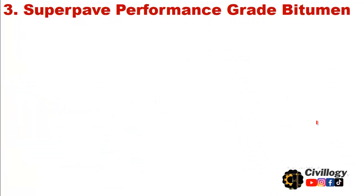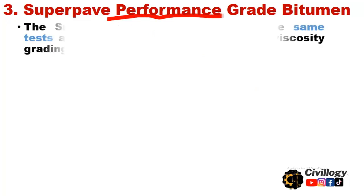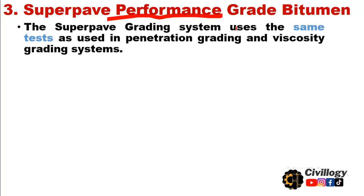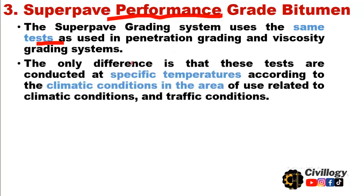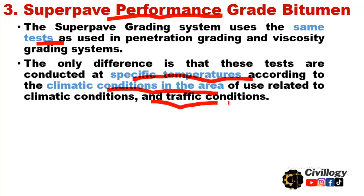The third system of gradation of bitumen is Superpave performance grade bitumen. The Superpave grading system uses the same tests as used in penetration grading and viscosity grading systems. The only difference is that these tests are conducted at specific temperatures according to the climatic conditions and traffic conditions in the area of use.